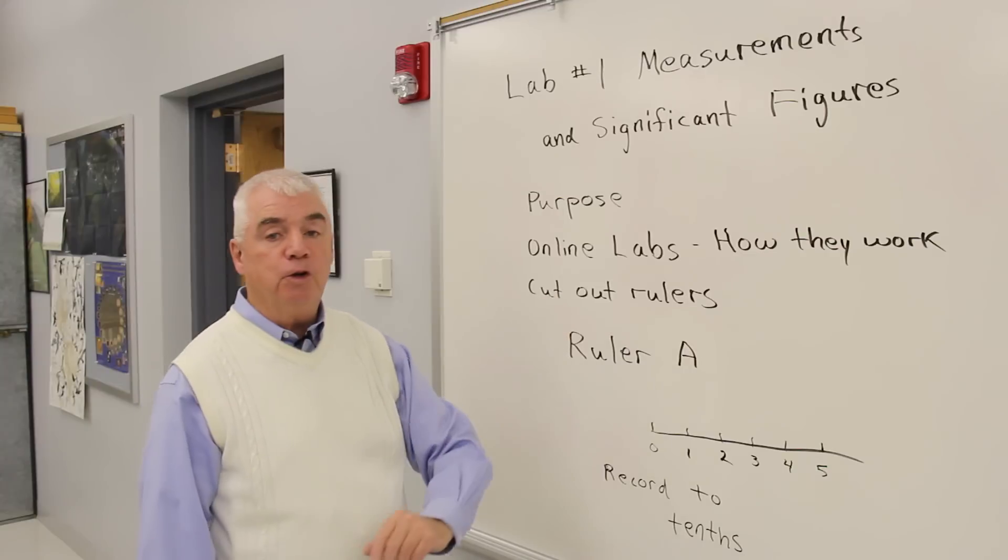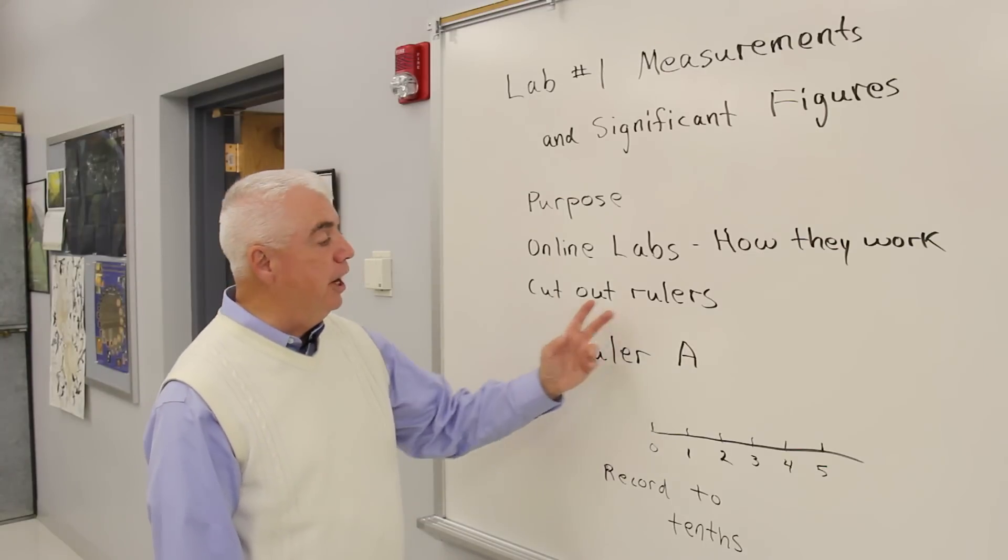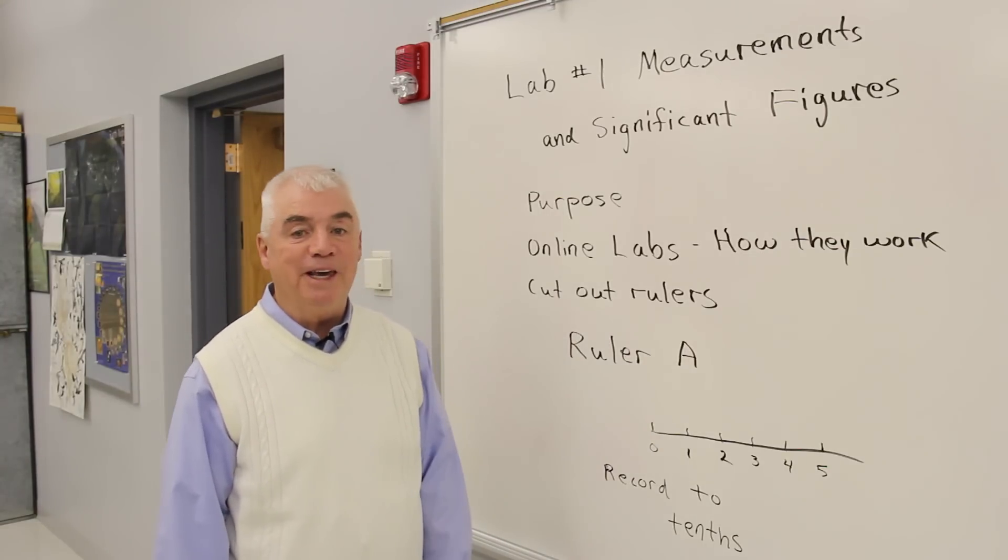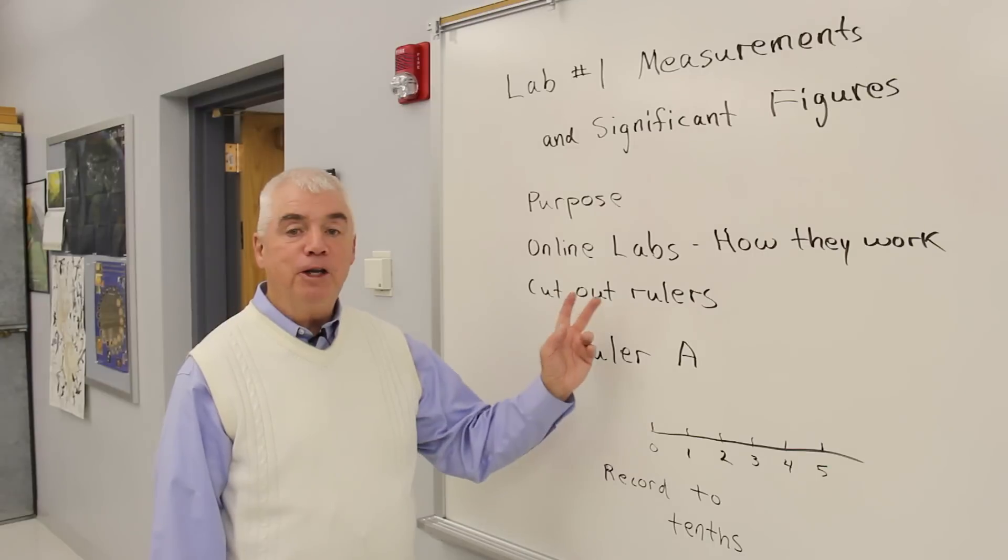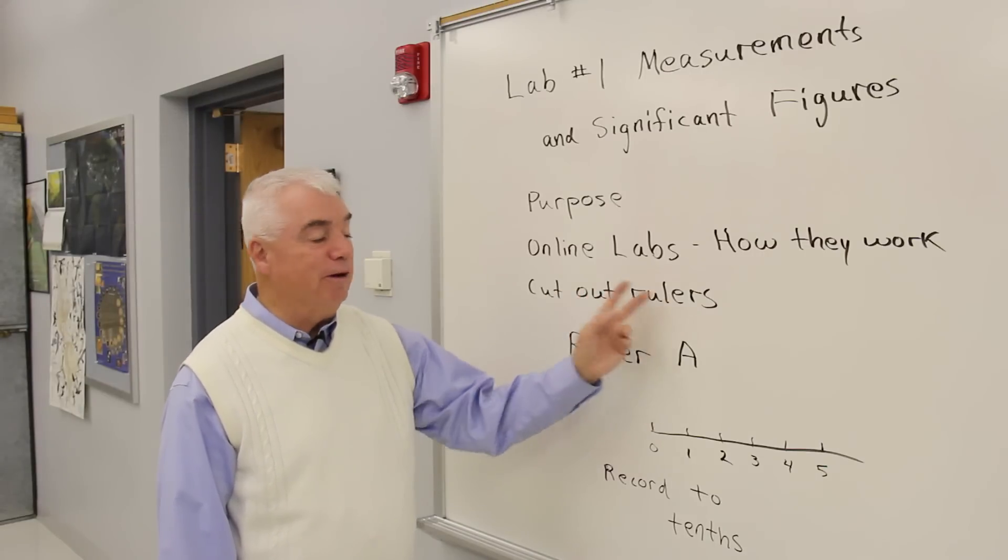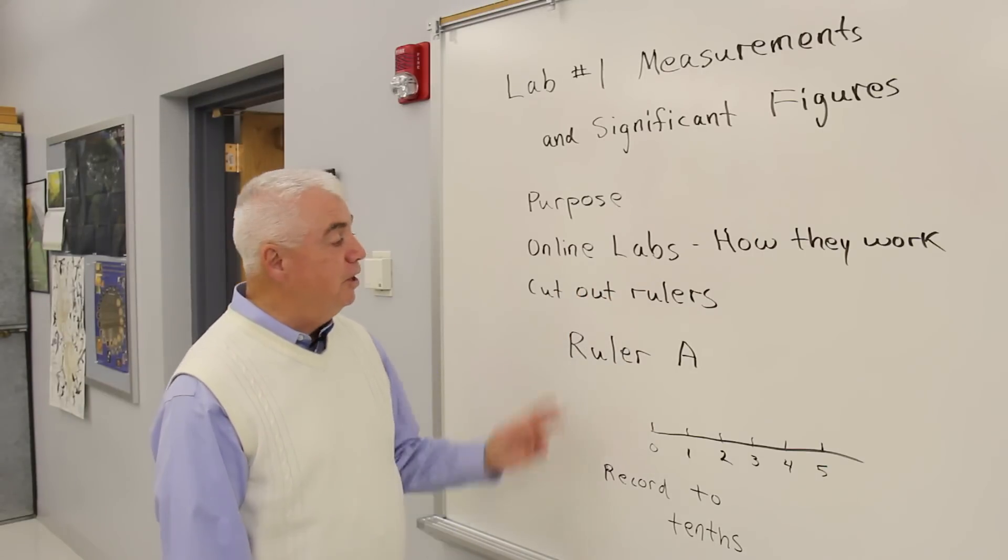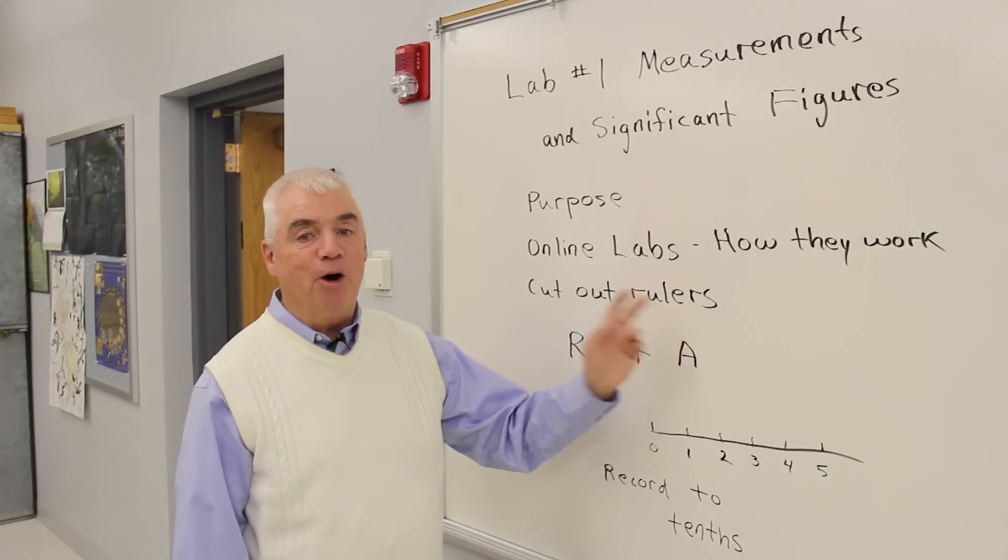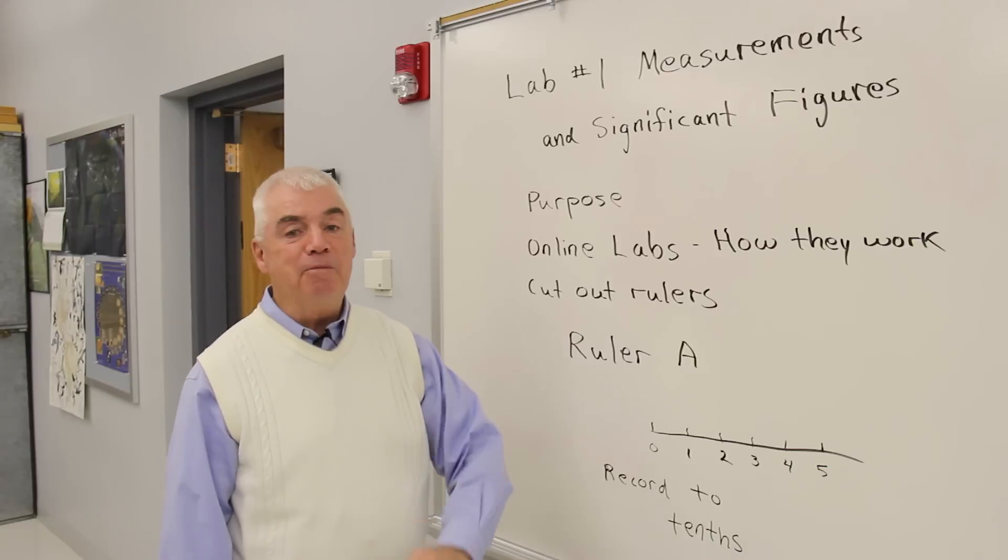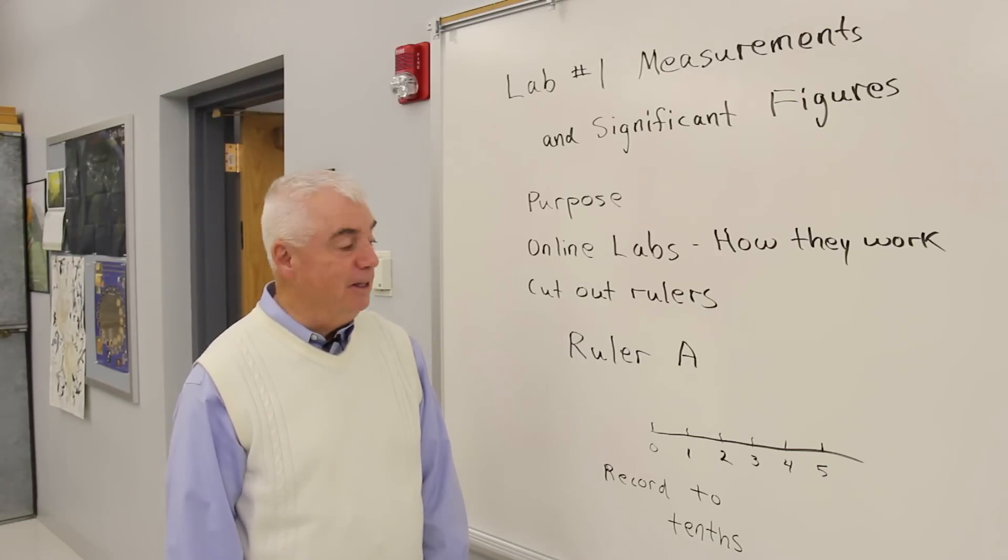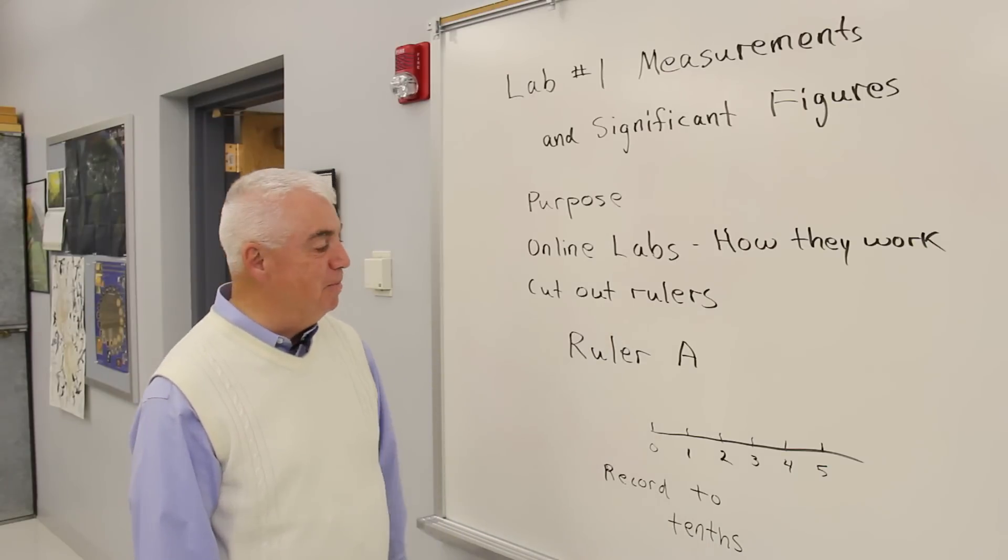One of the first things that you'll do in this experiment is to cut out rulers, ruler A and B, that you'll use to measure some objects. And if you've rented your lab manual or if you bought a used lab manual, you may not have that page in your book. If you find yourself in that situation, send me an email and I'll scan that page and send it back to you.